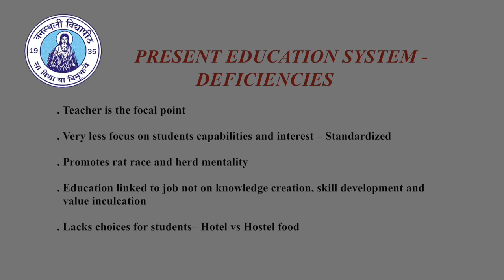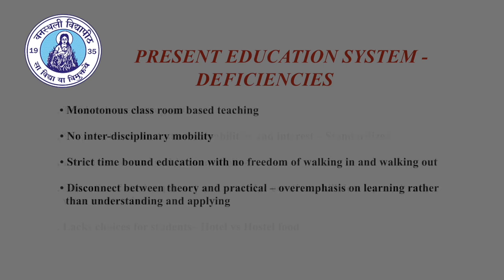Moreover, there is a total lack of interdisciplinary movement in terms of courses and programs. For example, a student of engineering has no scope for inputs on history, geography, or management in his curriculum. The same is true for other disciplines. Today, teaching-learning is confined in the classroom with over-emphasis on managing theory. There is very little scope for group work, data collection, field work, practicals, projects, etc. In order to overcome these problems, UGC has asked all higher educational institutes to implement a credit-based choice system.